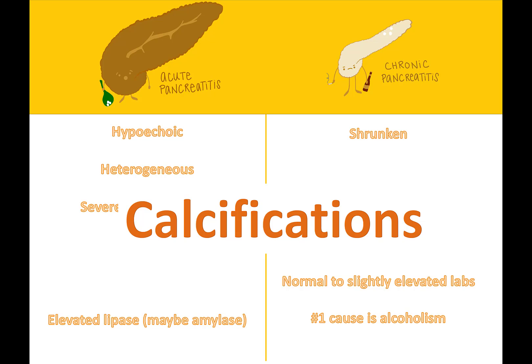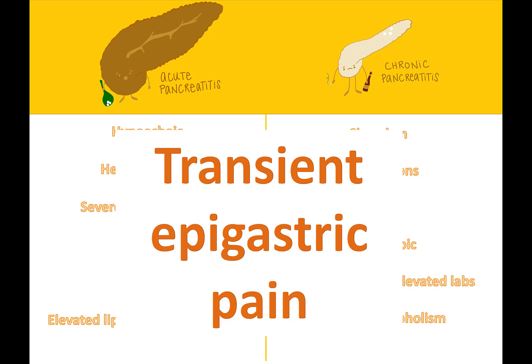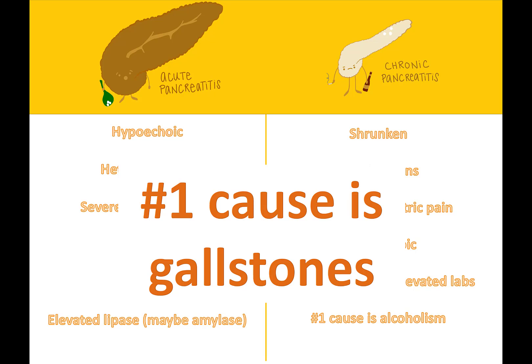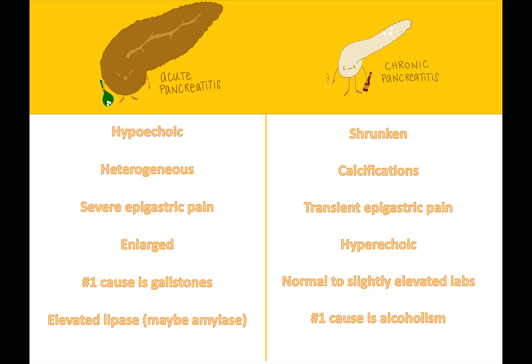Which pathology can cause calcifications to form? Chronic pancreatitis. Who will experience epigastric pain that comes and goes? Chronic pancreatitis. The patient might also experience symptoms related to a non-functional pancreas. Which pancreatitis is more likely to be associated with gallstones? Acute pancreatitis. Gallstones that block the pancreatic duct can cause pancreatitis and other complications.